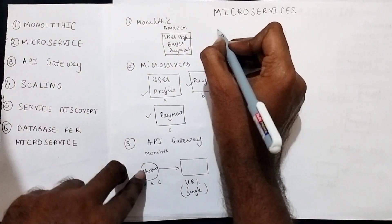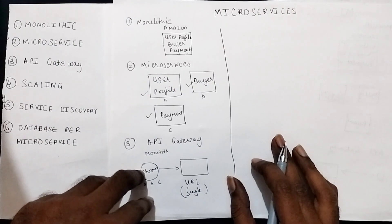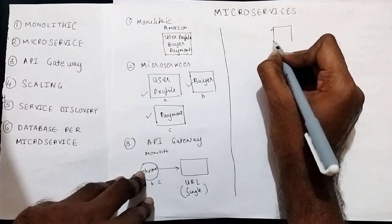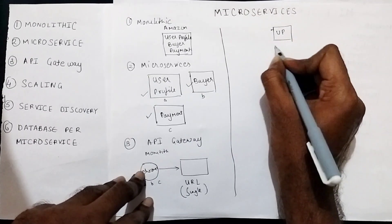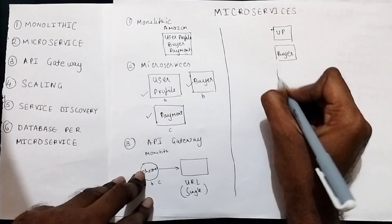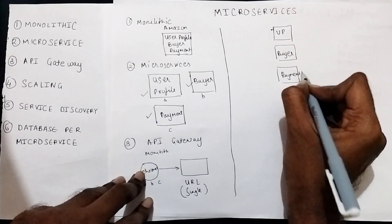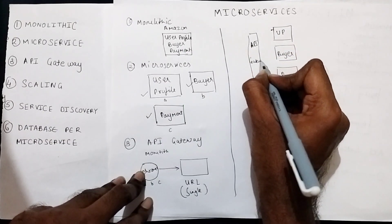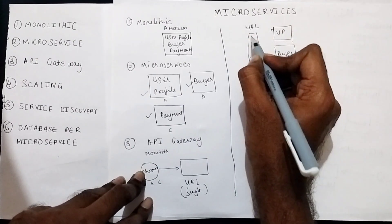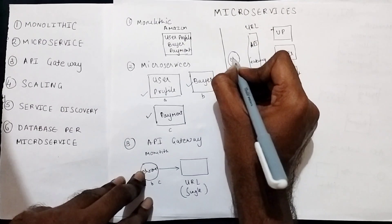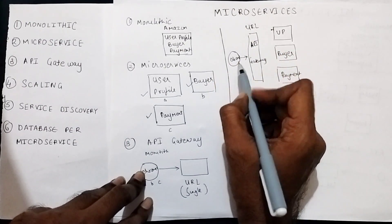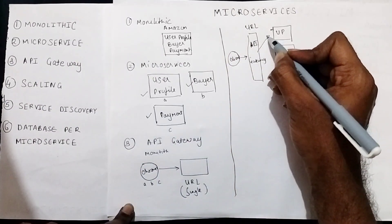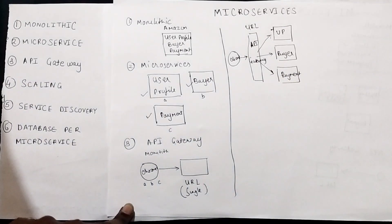That is the reason we came up with the concept of an API gateway. In an API gateway, consider we have the user profile microservice, the buyer microservice, and the payment microservice. There will be an additional layer in front of them — we call this layer the API gateway. The API gateway runs on one URL, and only that URL is shared with the client. The client always calls the API gateway, and the API gateway internally calls either the user profile, the buyer, or the payment service based on the URL slug.